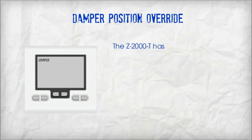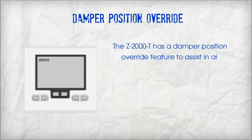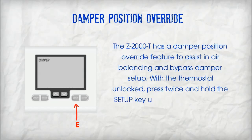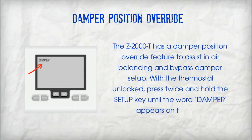The damper position override. The Z2000T has a damper position override feature to assist in air balancing and bypass damper setup. With the thermostat unlocked, press twice and hold the setup key until the word 'damper' appears on the LCD.